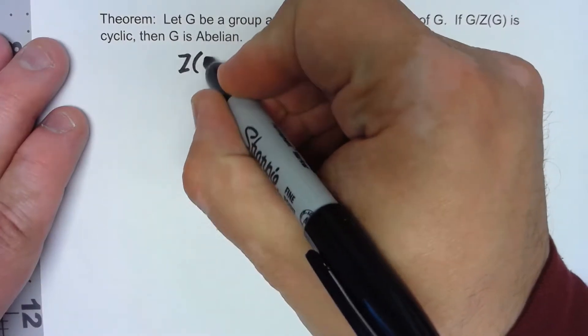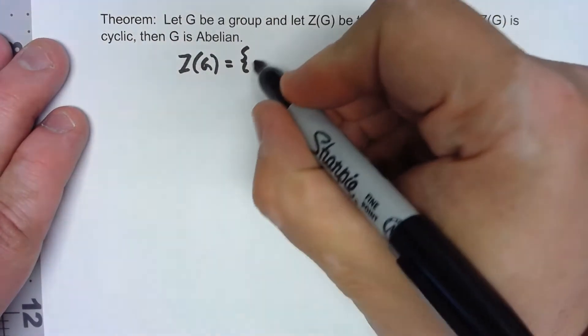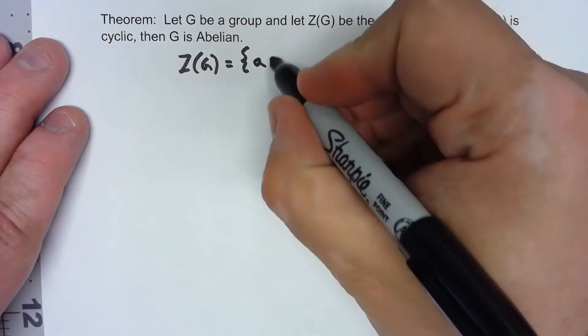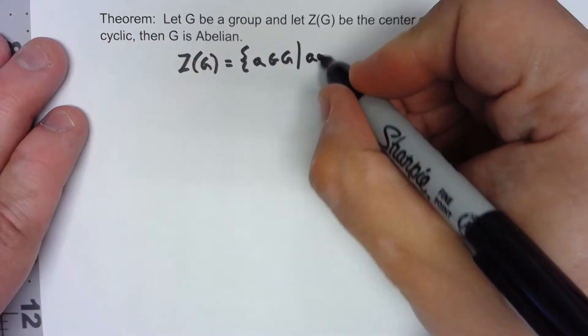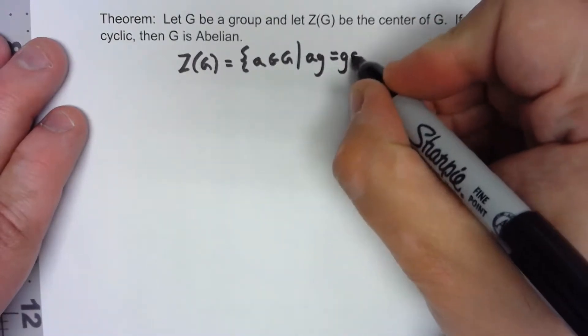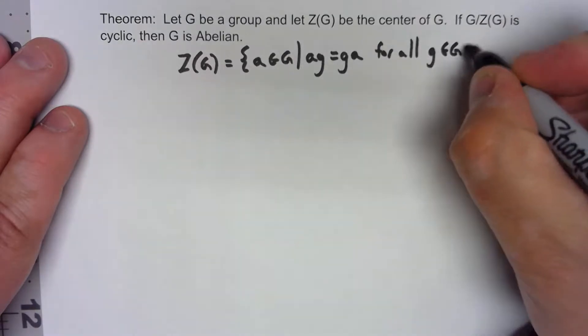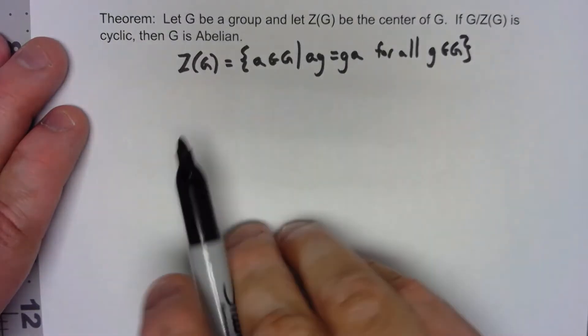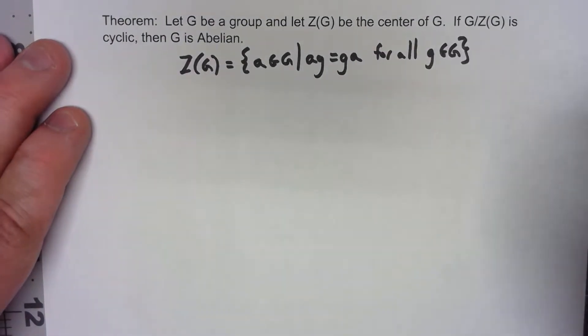The center of G is the set of all A in the group such that AG equals GA for all G in the group. So basically it's the group elements that commute with every other group element.